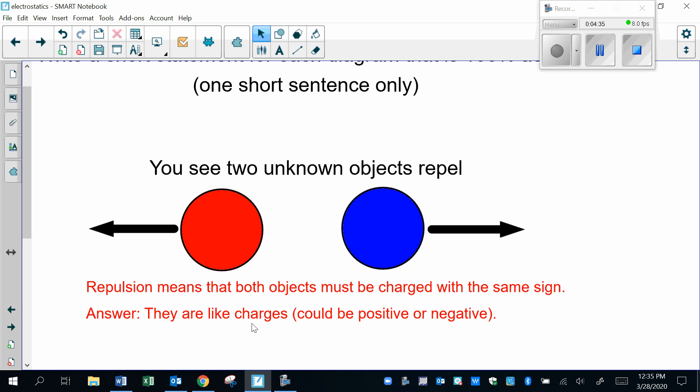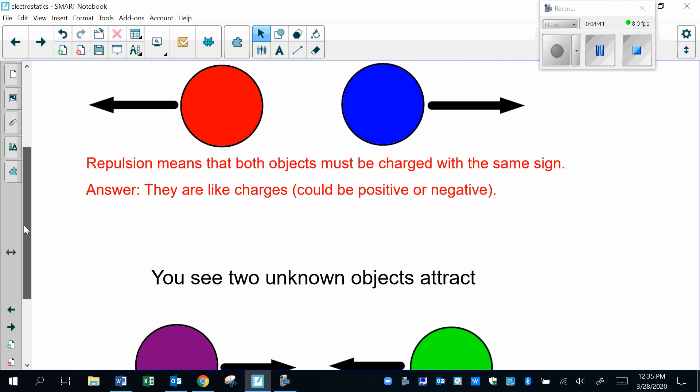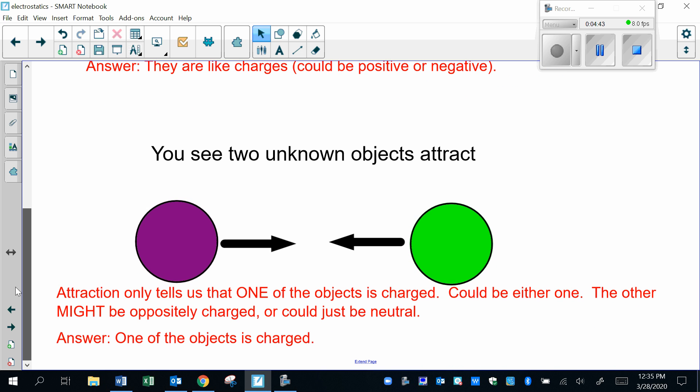The final question involved two unknown objects that were attracted to each other. You've got rule four and rule six that could both be in play. The only thing you could say for sure is one of these has to be charged. Maybe the purple is charged and the green is neutral—they will attract. Maybe the green is charged and the purple is neutral—they will attract.